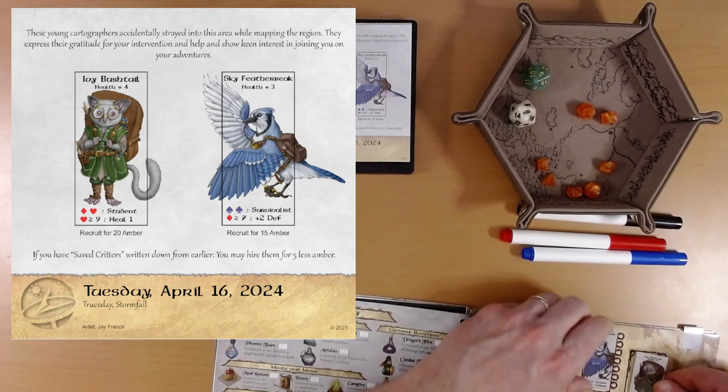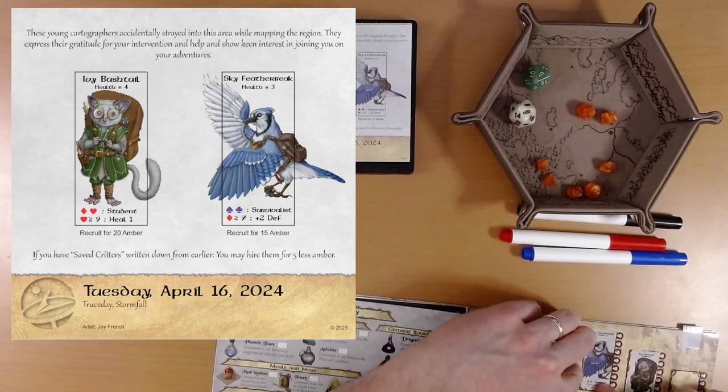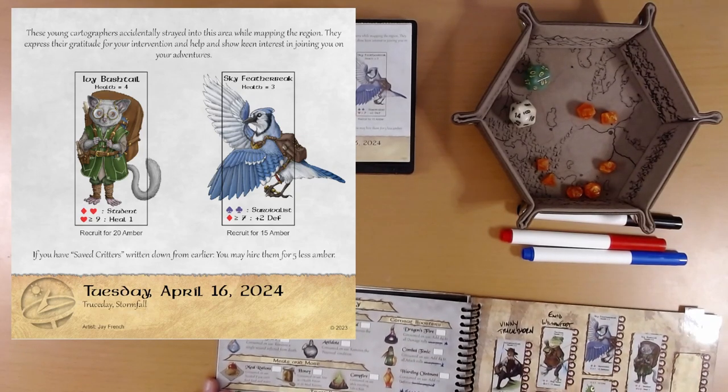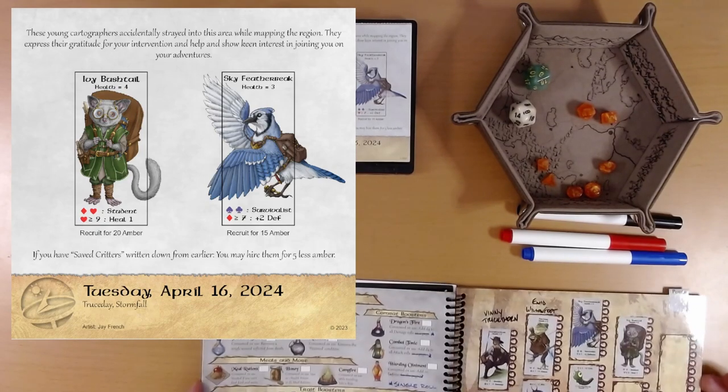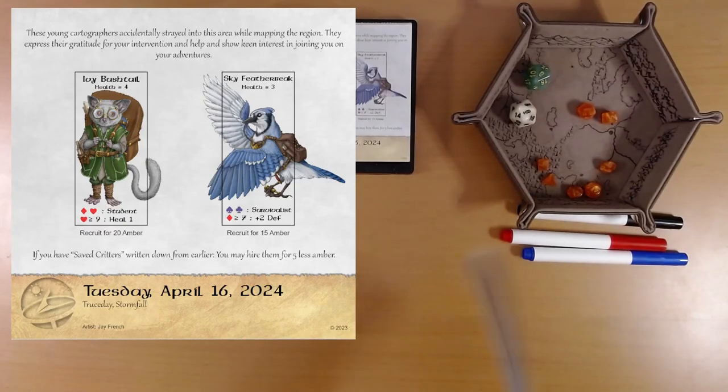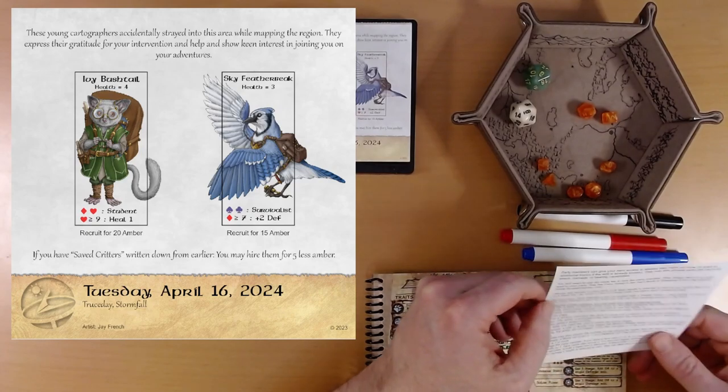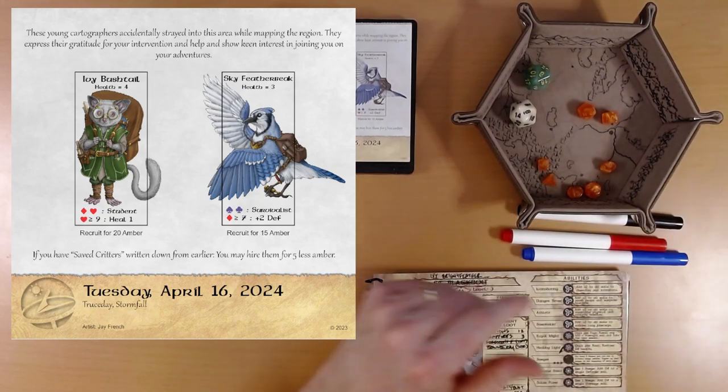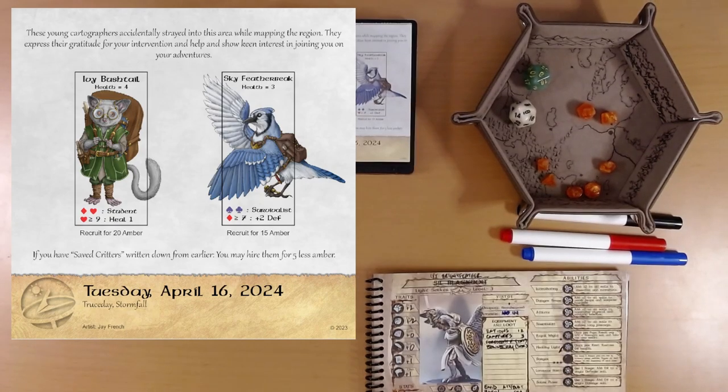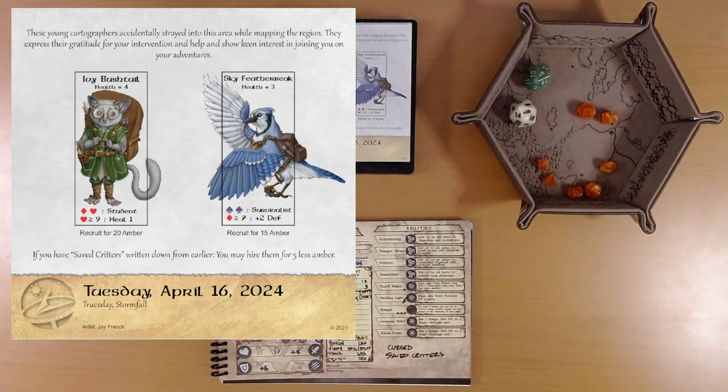I think these might be the cartographers from that quest. If you have saved critters written down, we do, you may hire them for five less amber. Absolutely. We don't have room on our party, I think, for two more. But, oh, we do. In fact, we could add three more. So yeah, let's take them.